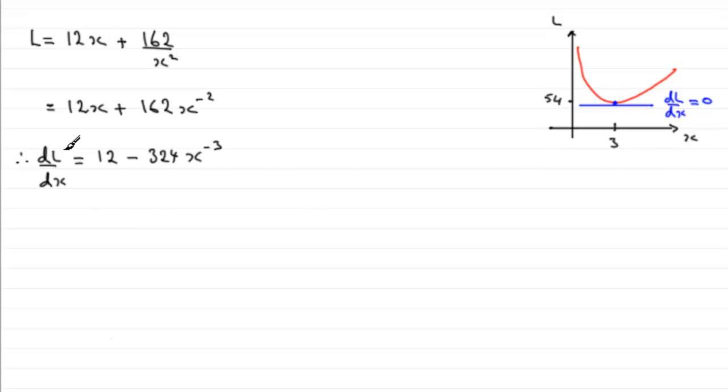Where we differentiate DL by DX again with respect to X. So if we carry on from where we left off, we've got that therefore d²L by dx² equals, and if we differentiate the 12, well that goes to zero. If we differentiate -324x^(-3), multiply -324 with -3 and take 1 away from the power.